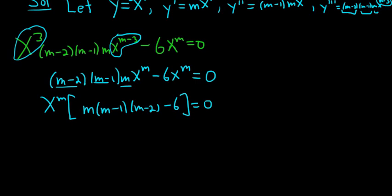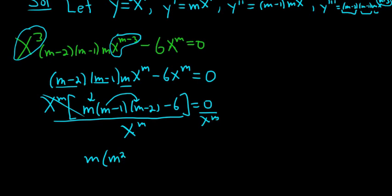So we have m(m - 1)(m - 2) - 6 = 0. I'm going to go ahead and multiply this out. m times m is m². The middle term is -m. The outer term is -2m. That means it's going to give us -3m. And then -1 times -2 is positive 2. Minus 6, and it's all equal to 0.